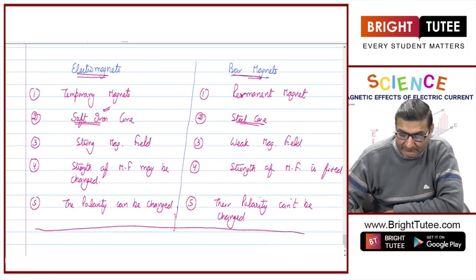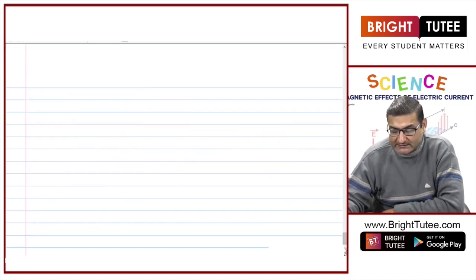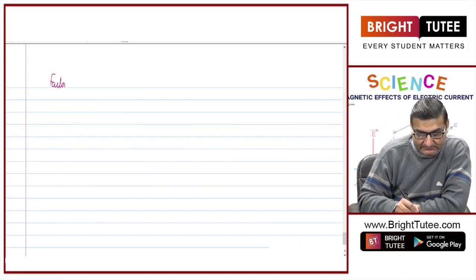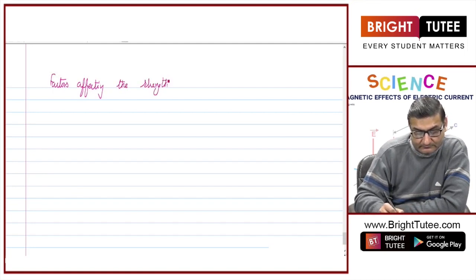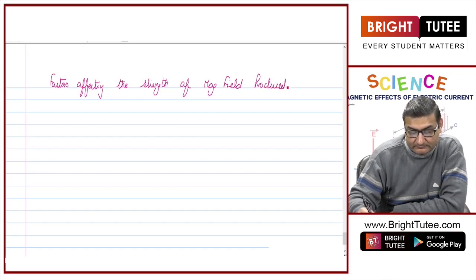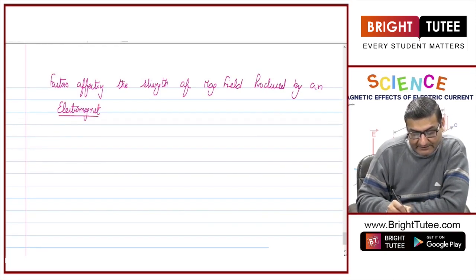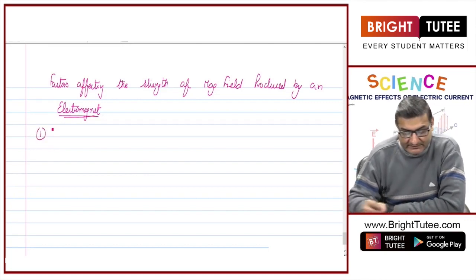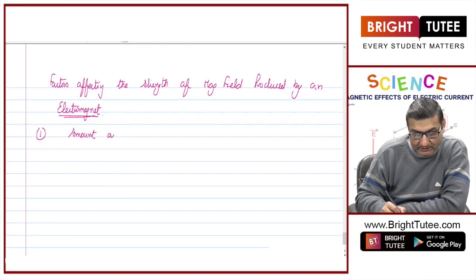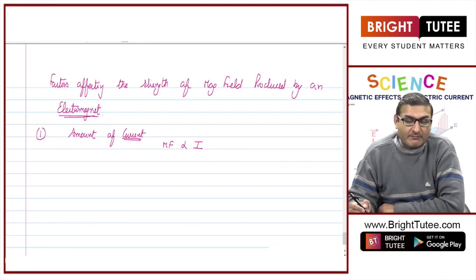These are a few differences between electromagnets and bar magnets. Now, the factors affecting the strength of the magnetic field produced by an electromagnet: the first factor, as always, is the amount of current. The magnetic field is directly proportional to the amount of current — the more current, the stronger the magnetic field.